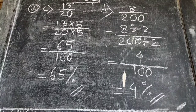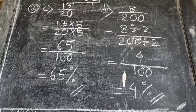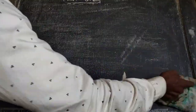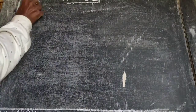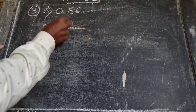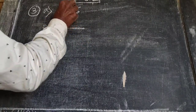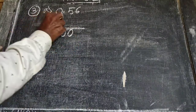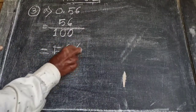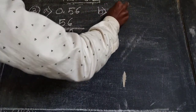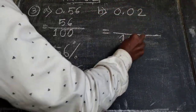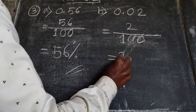Question 3: Express each decimal as a percentage. (a) 0.56 — for the decimal point, 2 digits means 2 zeros in the denominator, so it is 56 by 100, which equals 56 percent. (b) 0.02 — similarly, 2 digits gives 2 by 100, which equals 2 percent.